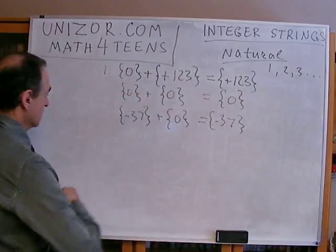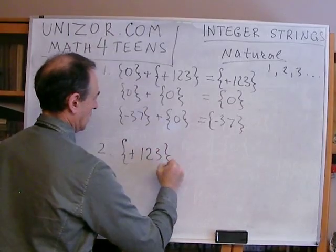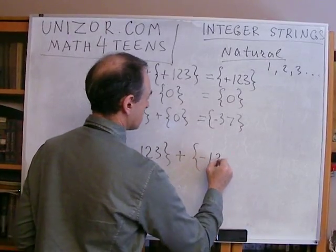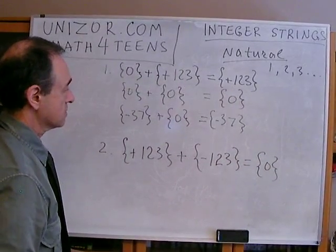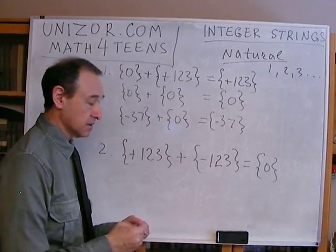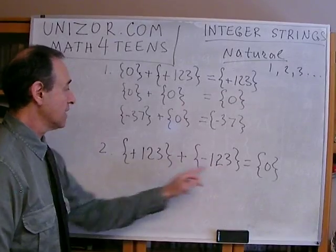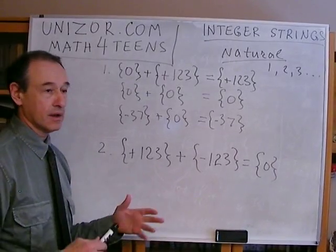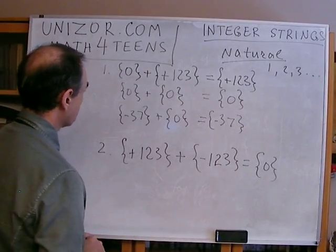Rule number two: if I am adding two elements of my new set with opposite signs — so one is plus and another is minus — and they contain the same natural number, by definition I get the element zero. This is a rule, a definition, an axiom of how I define the operation of addition between any two numbers with different signs and the same natural number inside. This will be a prototype of my reverse operation in the future.